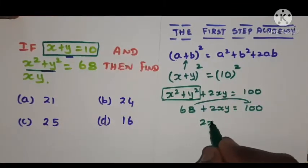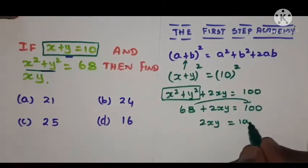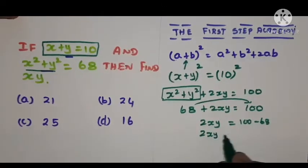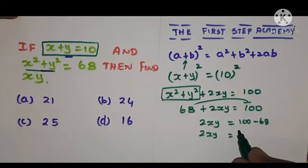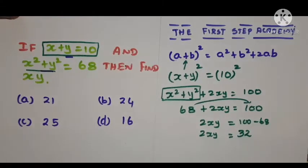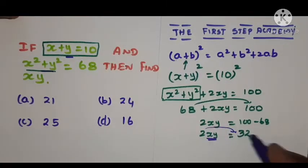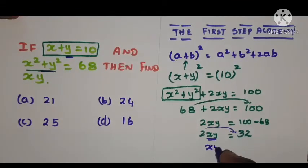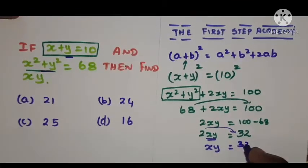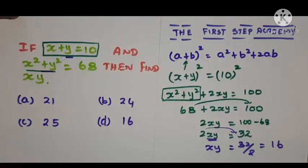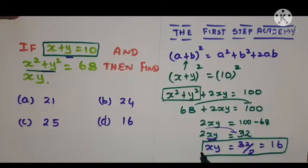Bringing 68 to the right-hand side: 2xy = 100 − 68 = 32. Now dividing both sides by 2, xy = 32 ÷ 2 = 16. So we have found the value of xy.